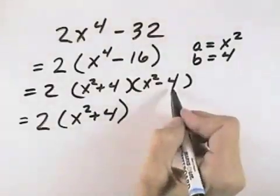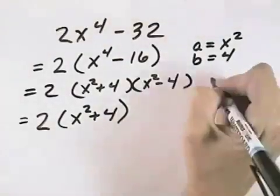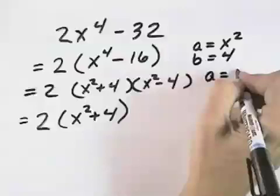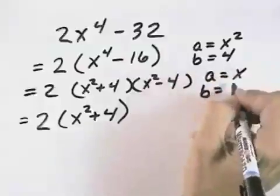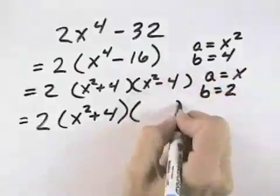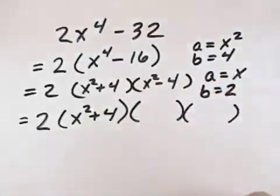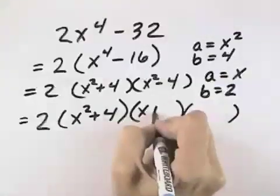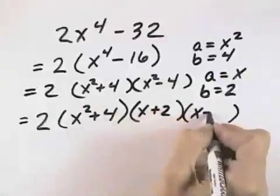However, x squared minus 4 is again the difference of squares, where the square root of the first term is now x, and the square root of the second term is now 2, so we can break it down again into the sum and difference of the square roots, which would be x plus 2 times x minus 2.